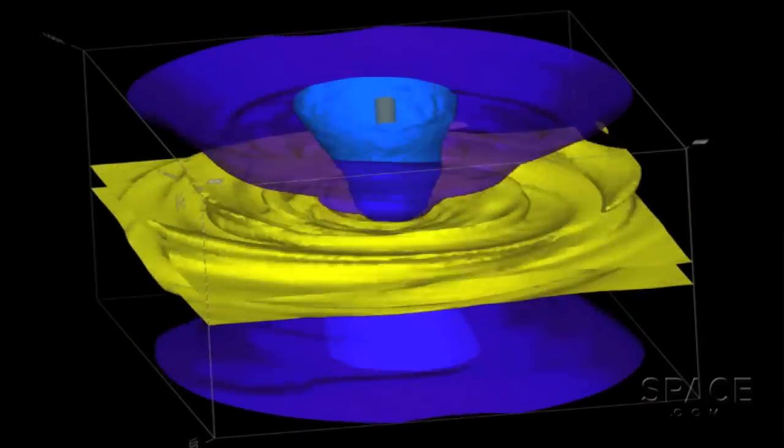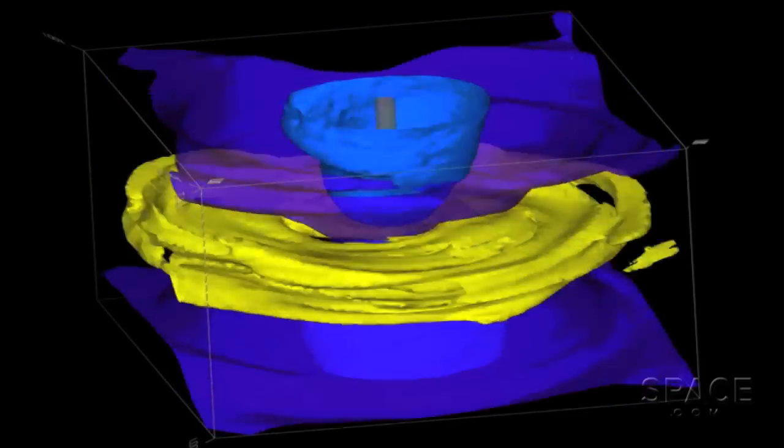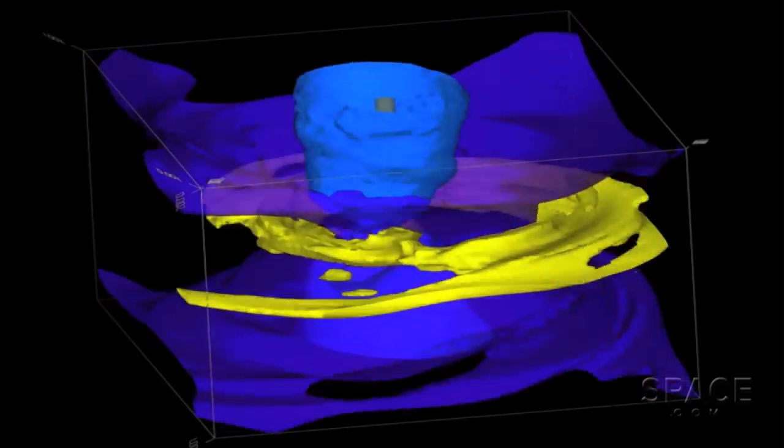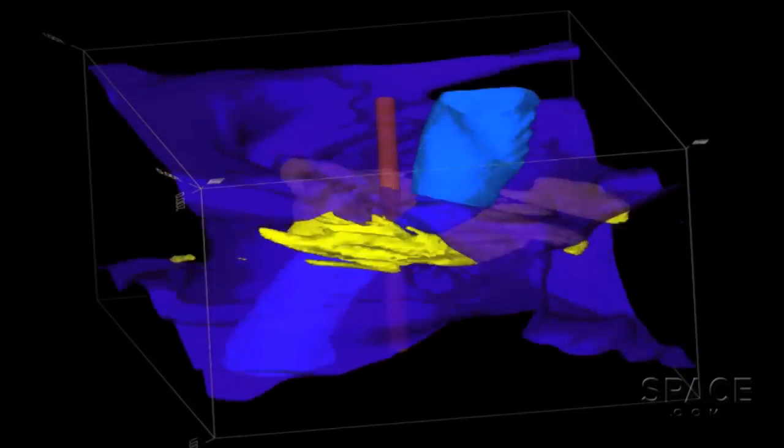New research is suggesting that when the axis of a black hole's rotation is offset from the mass of inward-rushing plasma, kinks, twists and tears in the jets may appear as the system tries to stay aligned with itself.